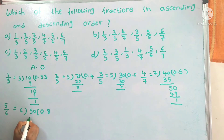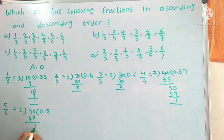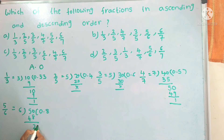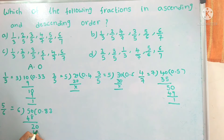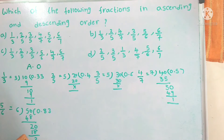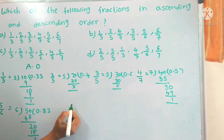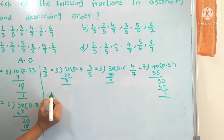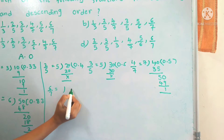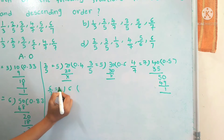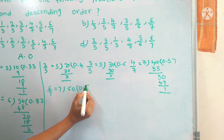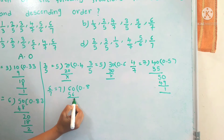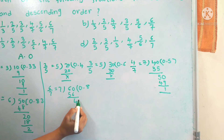Let's take the fifth fraction: 5 by 6. Dividing gives 0.83. Now the sixth fraction: 6 by 7. Dividing gives — 7 into 60 is 56, remainder 4; 7 into 40 is 35, remainder 5. So 6 by 7 equals approximately 0.85.